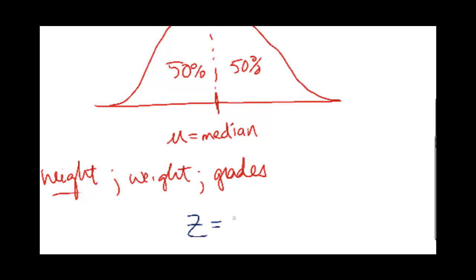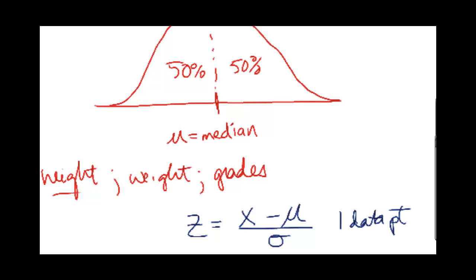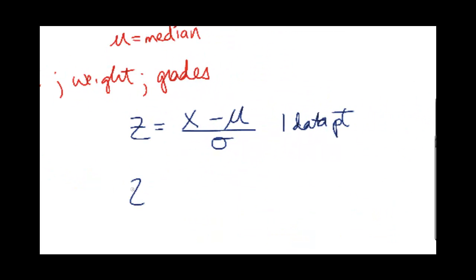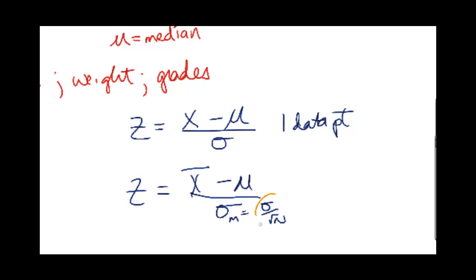You standardize it using the z-score formula. This is for one data point. There's also one for multiple data points, where the denominator becomes sigma over the square root of n. Some books just plug that in directly, others leave it in that form. I'll be doing an example for both of those.